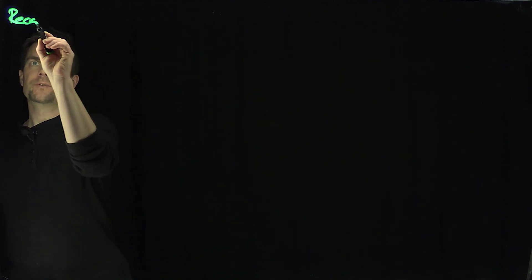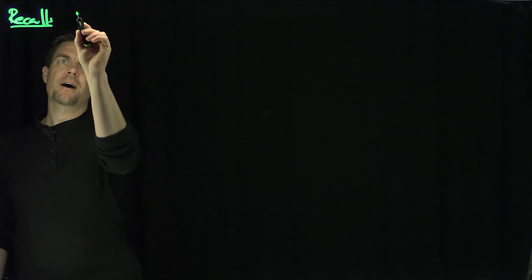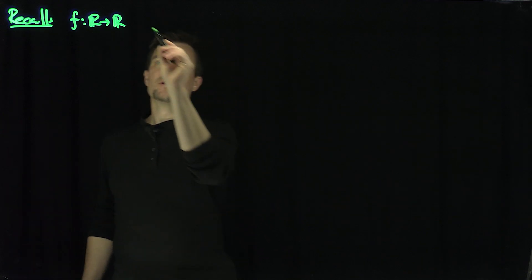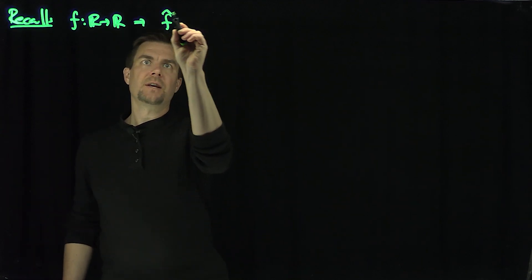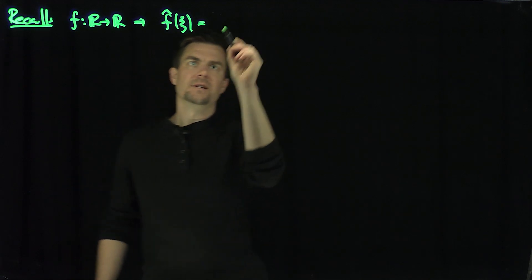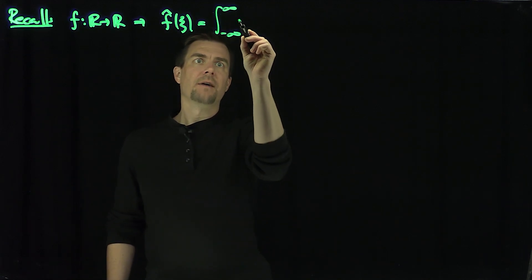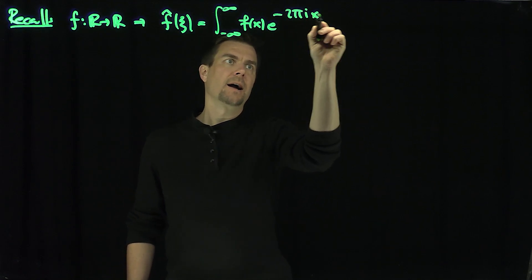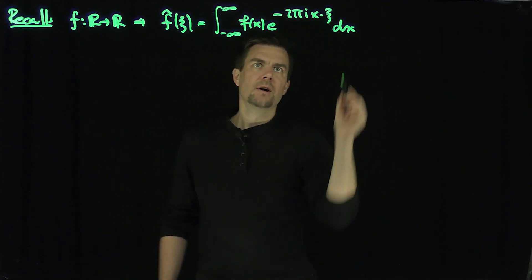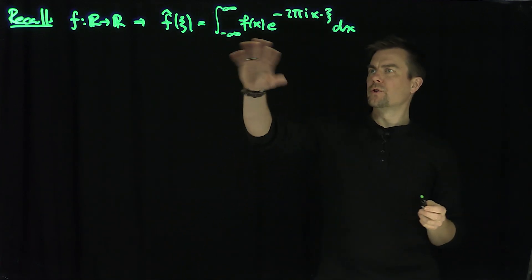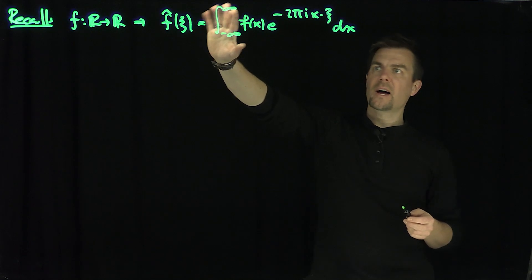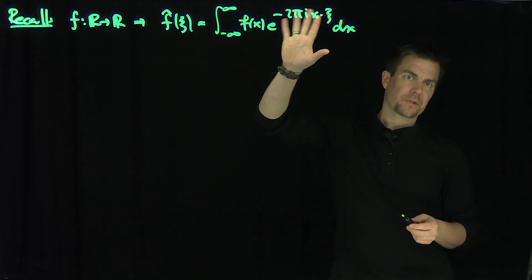Let's recall what Fourier transforms are. If f maps ℝ into ℝ and is sufficiently smooth and decaying at infinity, we can define f̂(ξ) as the integral from negative infinity to infinity of f(x) · e^{-2πixξ} dx. There are different rescalings of the Fourier transform — some have a 1/2π out front, some have a 1/√(2π) — but each of these is equivalent to this definition.